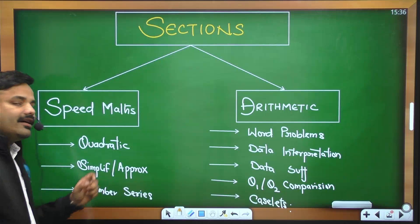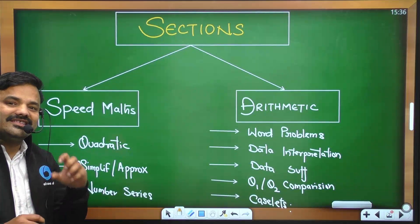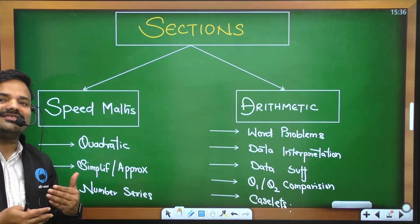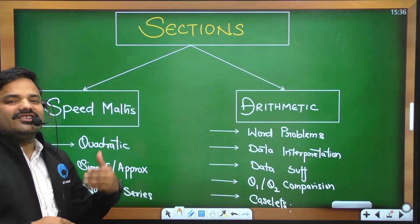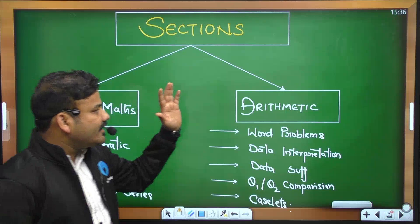Number series do tarike ke hain. Ek number series hai missing number, aur ek wrong number series. Toh wrong number series se pehle aapko missing number ke concepts ko carry out karna hai, barbar practice karna hai, jis se uska reflection wrong number series mein hoga. Kya time invest karna hai speed maths mein, kaun sa time invest karna hai arithmetic mein, voh hum section dekhenge.